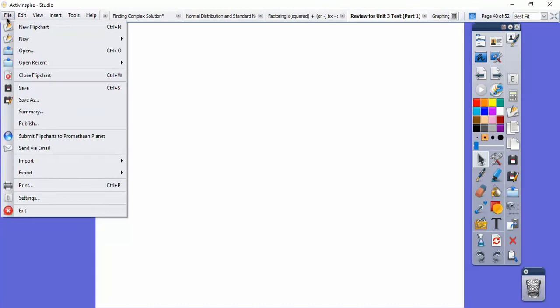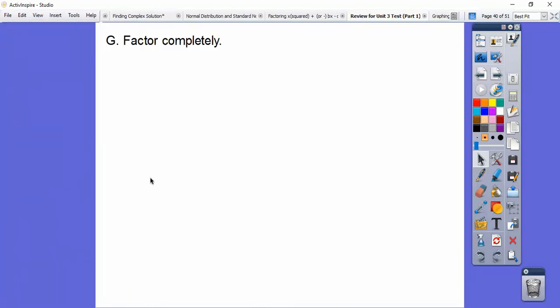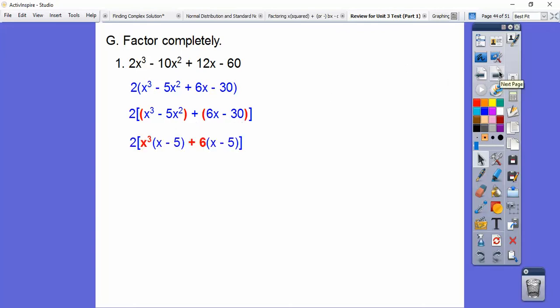Let's factor some, and then we'll stop after a couple of these. So here's this right here. Always look for a GCF. We can pull a 2 out. And then this one, I'm going to factor by grouping. I can pull an x² out of this. I can pull a 6 out of these guys. And then they both have the x minus 5 in there. So we pull that out, and there it is right there.